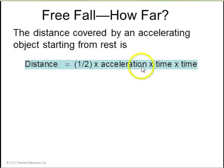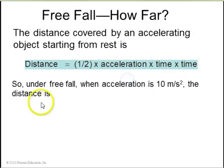How far does it fall? The equation for that is d equals one half a times t times t, or one half at squared. So under free fall, when you have acceleration of 10 meters per second squared, the distance after one second, one squared is 1, times 10, times a half gives you 5. It falls 5 meters after one second.